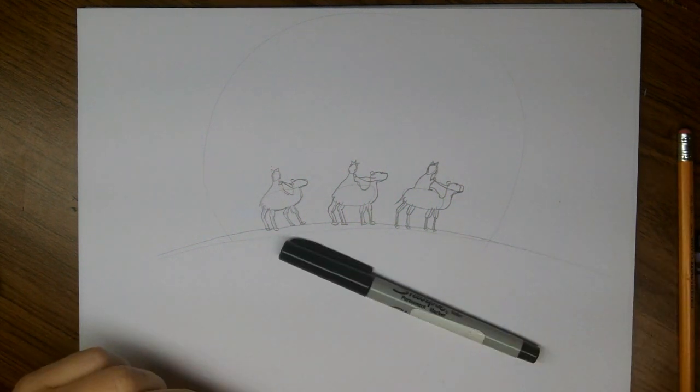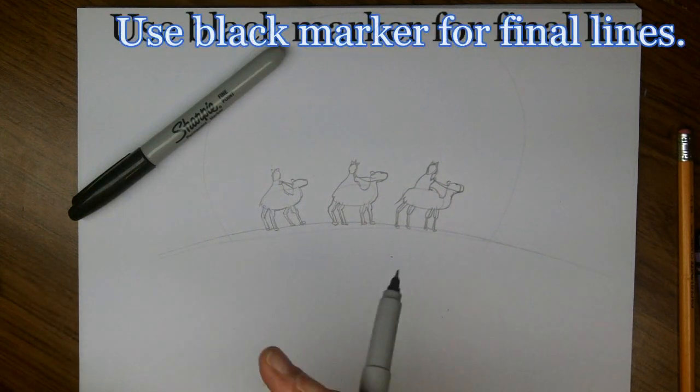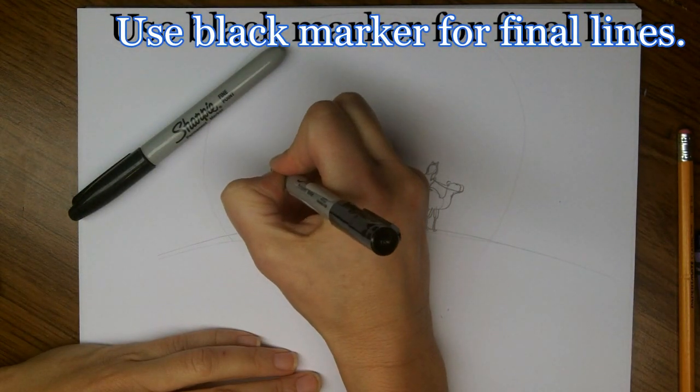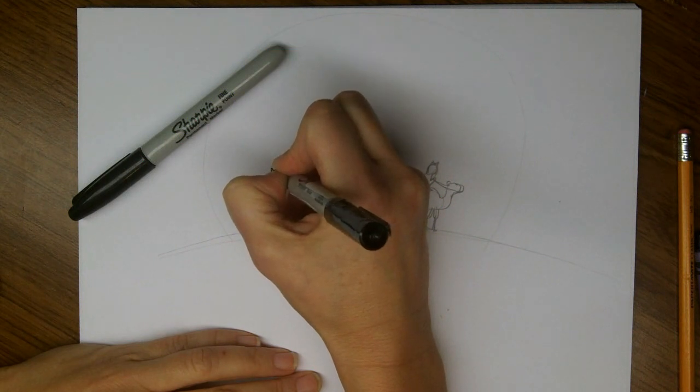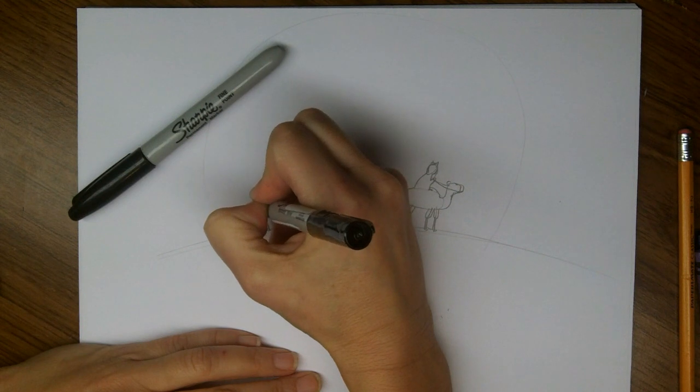So now what I'm going to do is I'm going to use my fine line sharpie to outline all of these camels and wise men. And I'll be using my regular sharpie, my thicker point sharpie, to fill in with color.